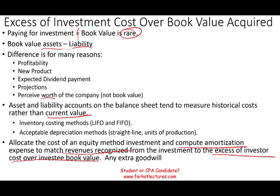Simply put: when we pay extra money over book value, that extra must be allocated somewhere — we need to identify why we paid extra. If their inventory is undervalued, we paid more because of that; we'll have to amortize this additional cost. If their building or equipment is worth more than book value, we paid more for those assets and must amortize that excess. If we cannot allocate the extra cost to any particular identifiable asset, then we assign that cost to goodwill, because we cannot identify a specific asset.